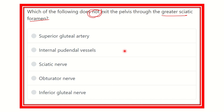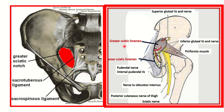Let's look at the greater sciatic foramen. Here, the red structure is the greater sciatic foramen. The smaller part visible in this picture is the lesser sciatic foramen. The greater sciatic foramen is bounded by the sacrotuberous and sacrospinous ligaments. This hole is the greater sciatic foramen.